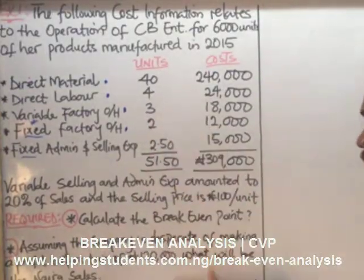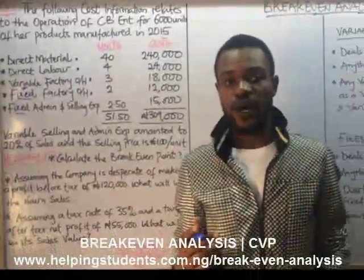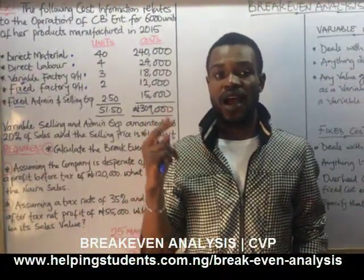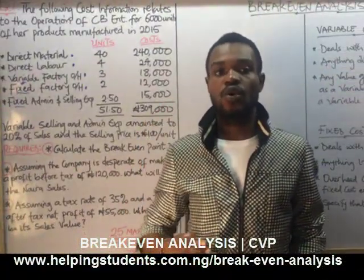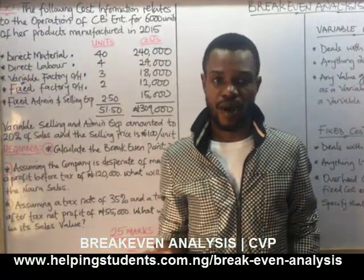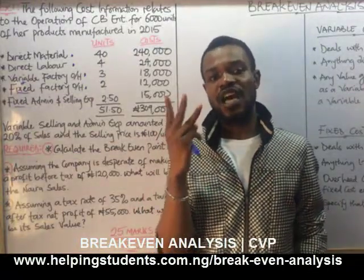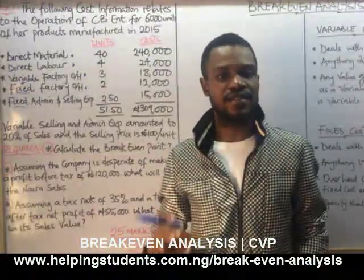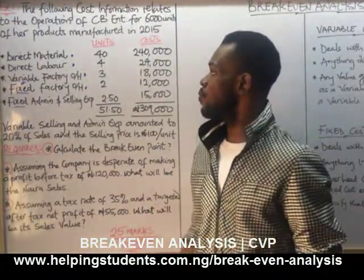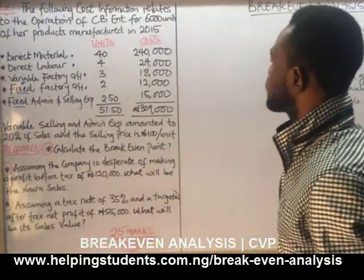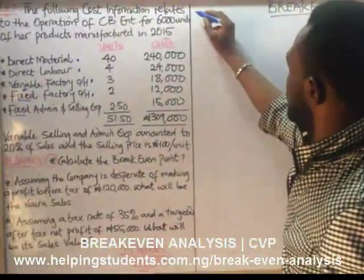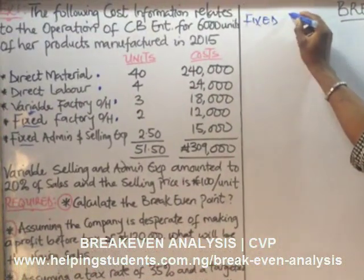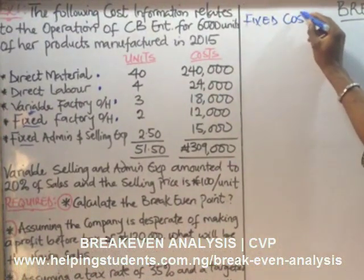To answer this question, the first thing we have to do is determine our fixed costs, then our variable costs, and also identify our selling price — because these are the three major things that the breakeven analysis works with. So let's go. What is our fixed cost?